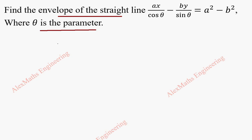As a first part, we take this equation and rewrite it. Ax into 1 by cos theta is secant theta, so that will become easier for differentiation. And minus by into 1 by sin theta will become cosecant theta. The rest of the terms are written as it is.